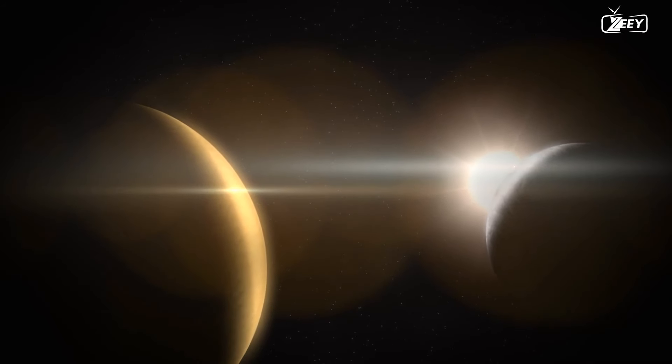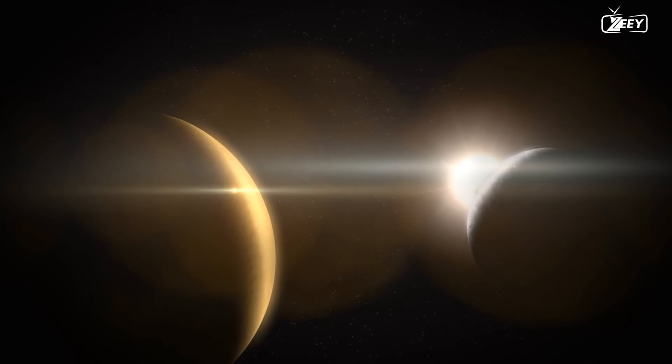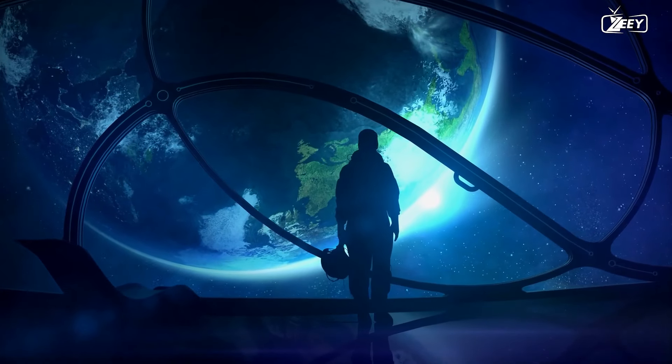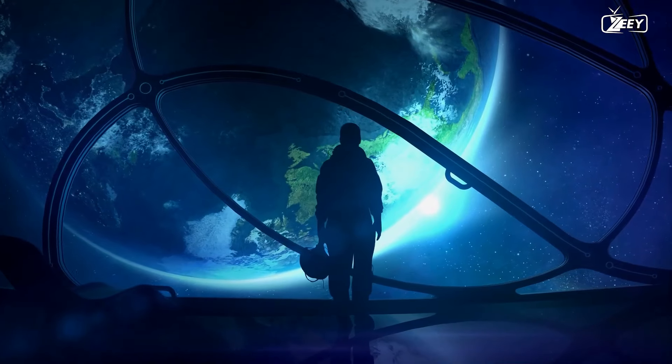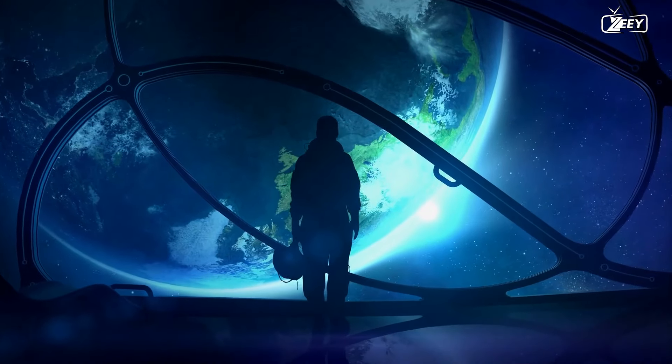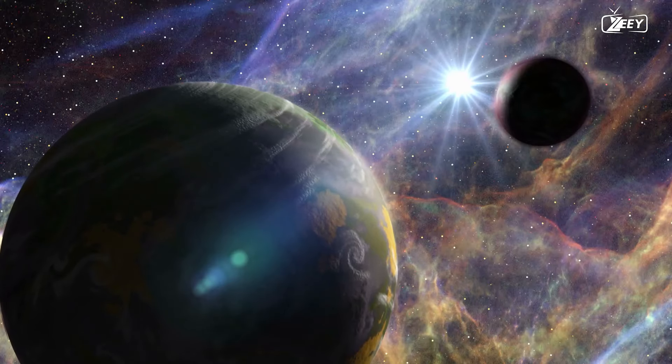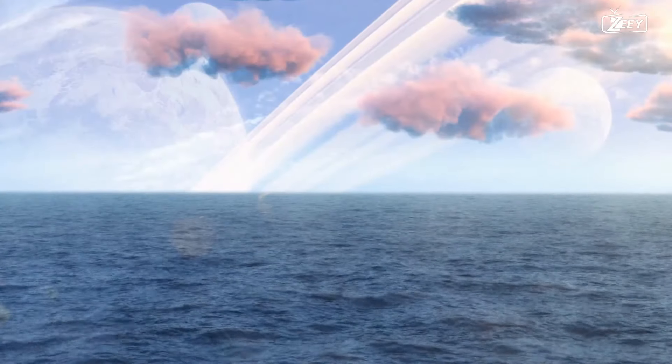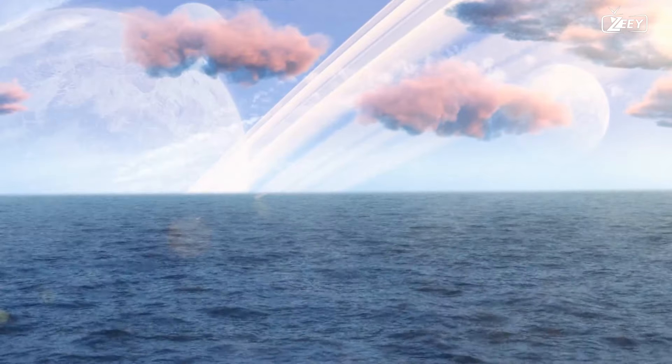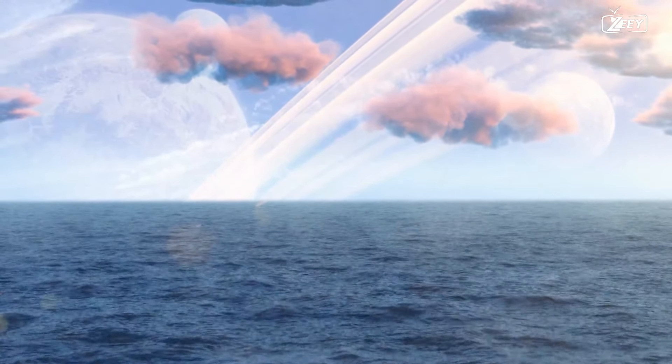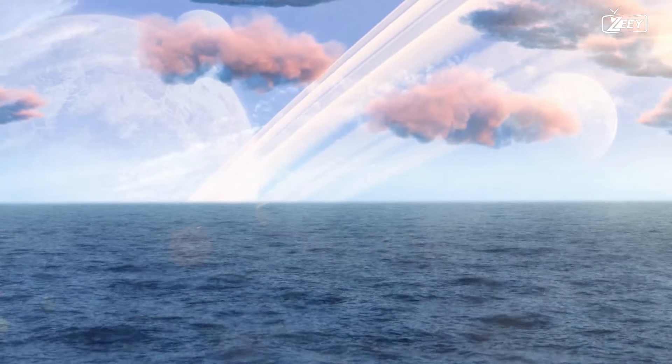The study of Venus and Earth provides insights into the factors that lead to planet habitability. As we continue to explore our solar system and beyond, it will be critical to understand how these components interact to produce and sustain life as well as how they may differ on other planets. Finally, we may be able to detect habitable settings elsewhere in the universe and better grasp the possibility for life beyond our own planet as a result of this knowledge.